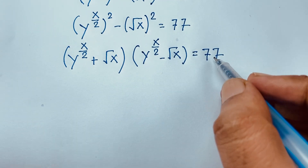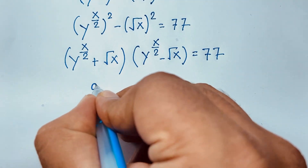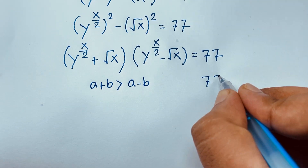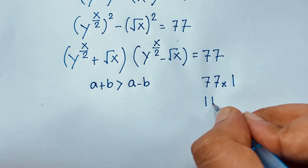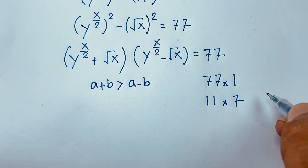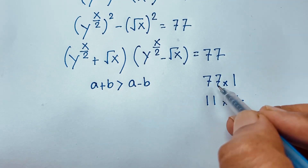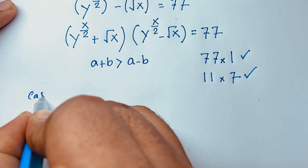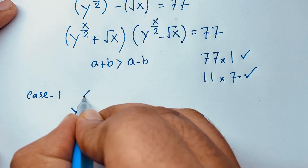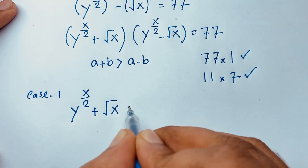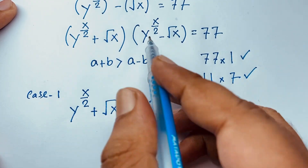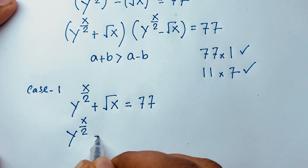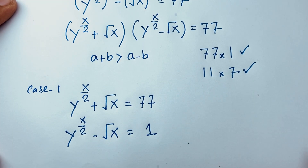We will find out the factors of 77. Note that a plus b is always greater than a minus b. So 77 can be written as 77 times 1 or 11 times 7. It is also 7 times 11, but that is not possible because a plus b is always greater than a minus b. So the valid cases are: 77 times 1, and 11 times 7. So for Case 1: y to the power x over 2 plus square root x equals 77, and y to the power x over 2 minus square root x equals 1.